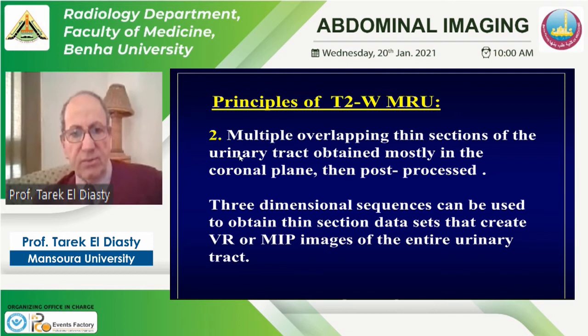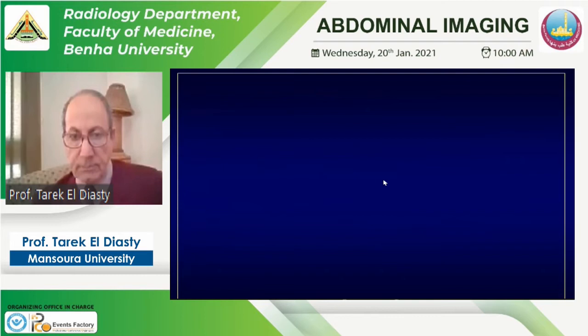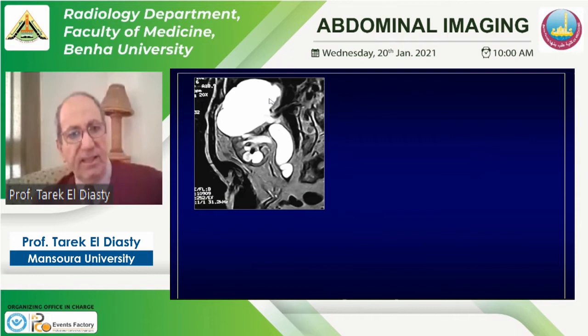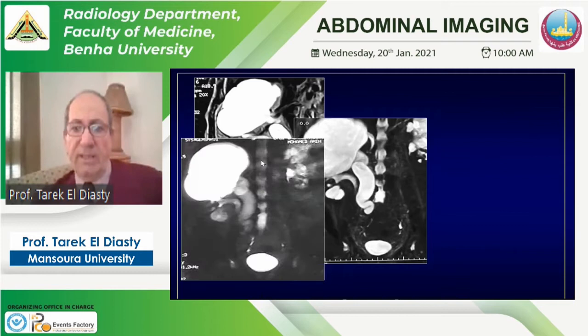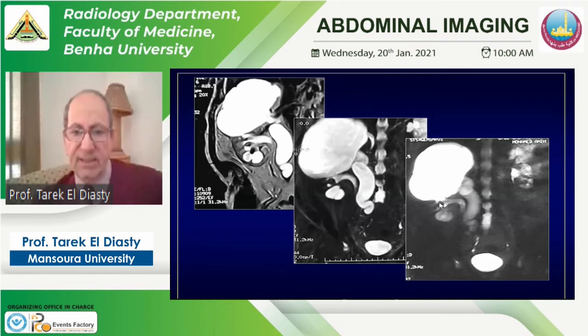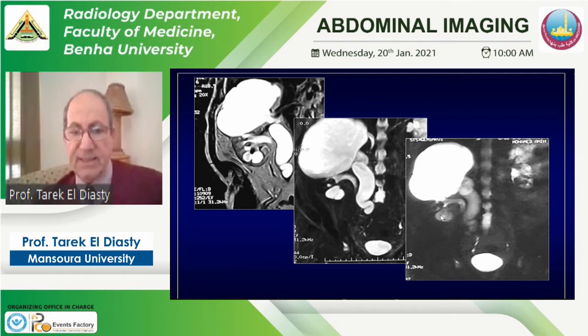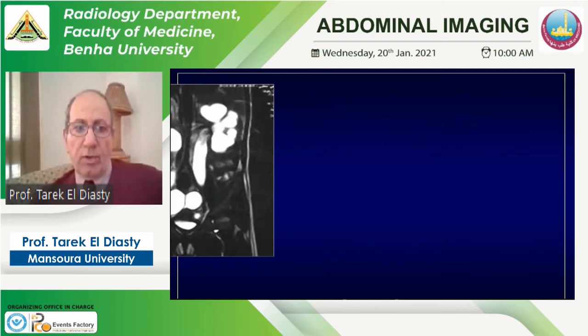The second technique is the multiple overlapping thin-section technique — a multi-slice technique. The urinary tract can be seen in coronal planes, and we can then do post-processing in other anatomic planes. In this example with a duplex right kidney, we can see dilated upper moiety and multiple signal void stones in the lower moiety. The summation map image shows both moieties, but note that signal void stones may be masked by surrounding hyperintense urine on T2-weighted images.